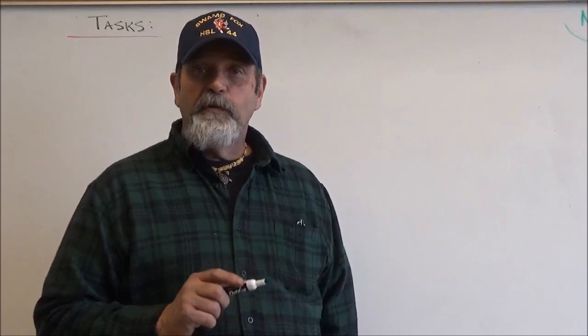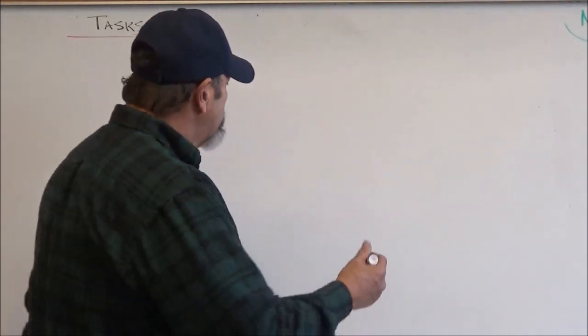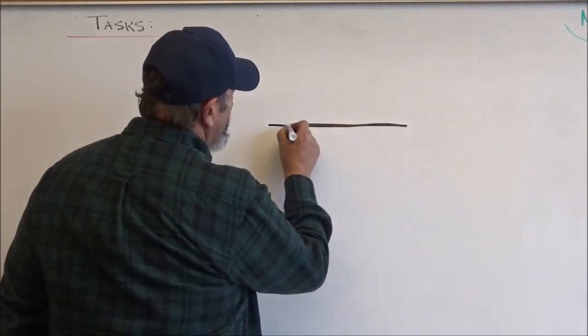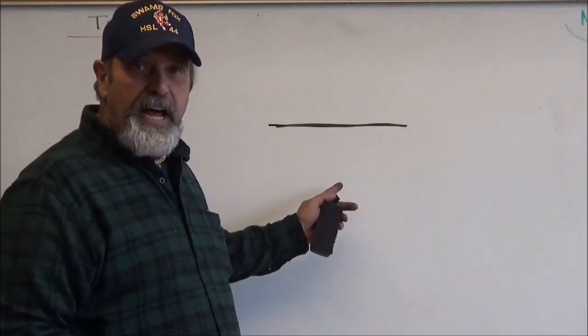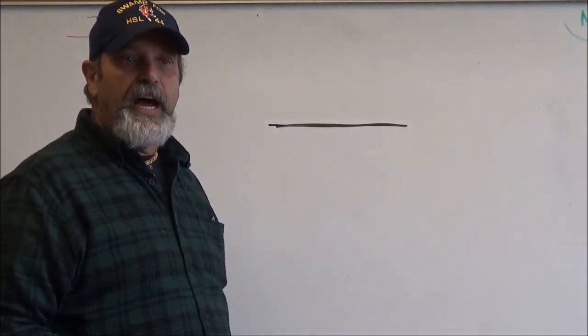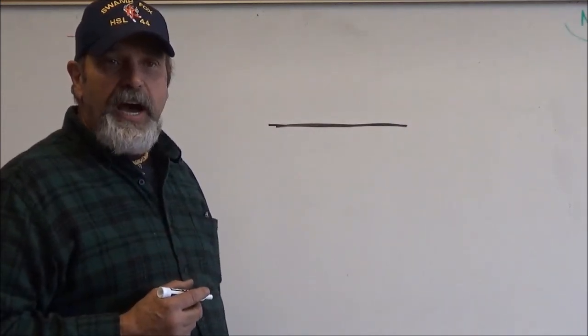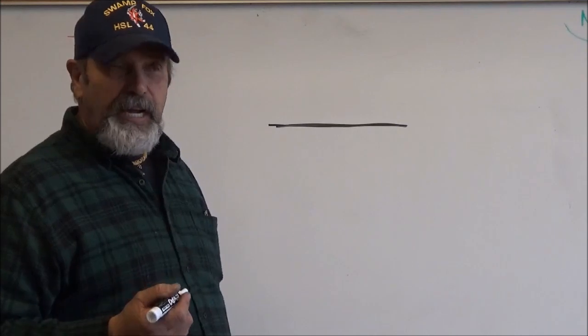And the very basics are going to be a reference line. Now this is your reference line. All it is is just a horizontal line, but it has two sides. One side is called the other side and the one other side is called the arrow side.